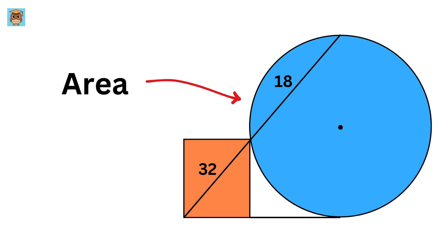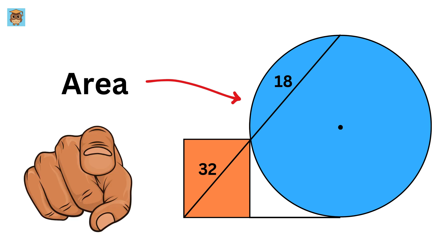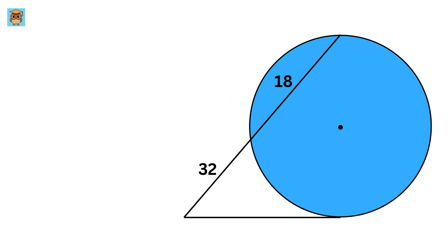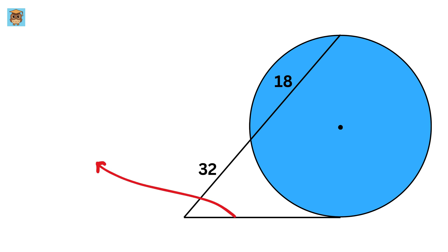Our job is to find the area of this circle. Now consider this circle and these two lines. Since this is the point of contact of this circle with the ground, therefore this line is going to be the tangent to this circle.